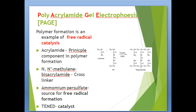Acrylamide gel is used as a supporting media in electrophoresis and is often referred to as PAGE. Acrylamide is the principal component in polymer formation. Methylene bisacrylamide serves as a cross-linker, ammonium persulfate serves as a source for free radicals, and TEMED acts as a catalyst.